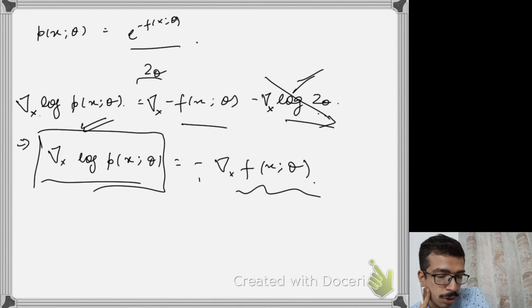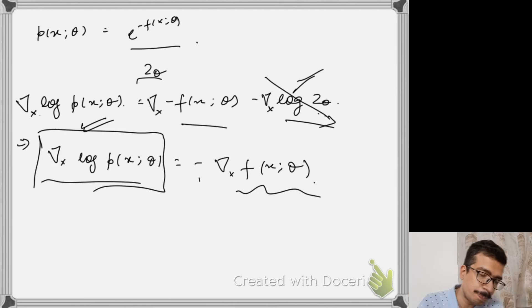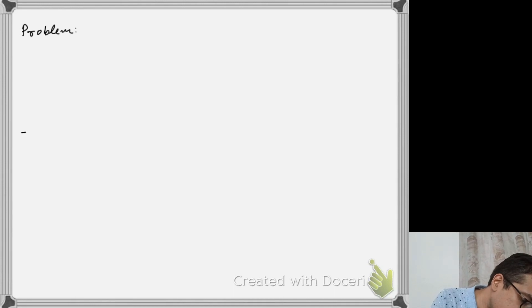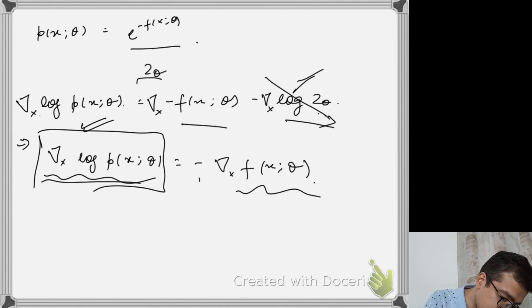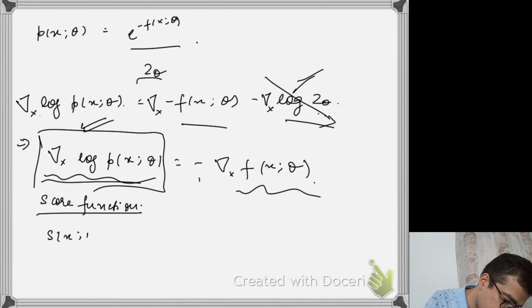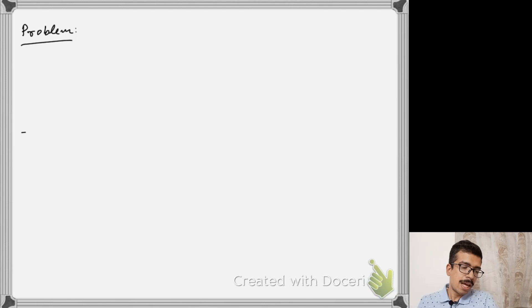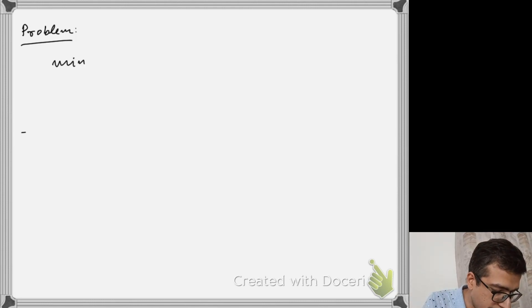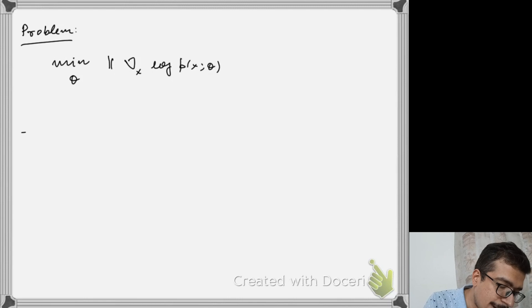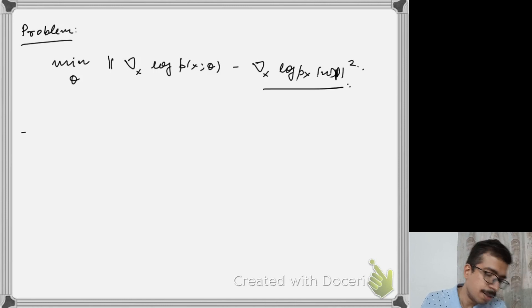Now the question is: I don't have the ground truth values. Let's formulate the problem. This gradient ∇_x log p_X(θ) is called the score function. I write it as S(x;θ) = ∇_x log p_X(θ). Our problem is now to minimize with respect to θ the expected squared norm difference between the model's score S(x;θ) and the true score ∇_x log p_X(x), where the expectation is taken over p_data(x).